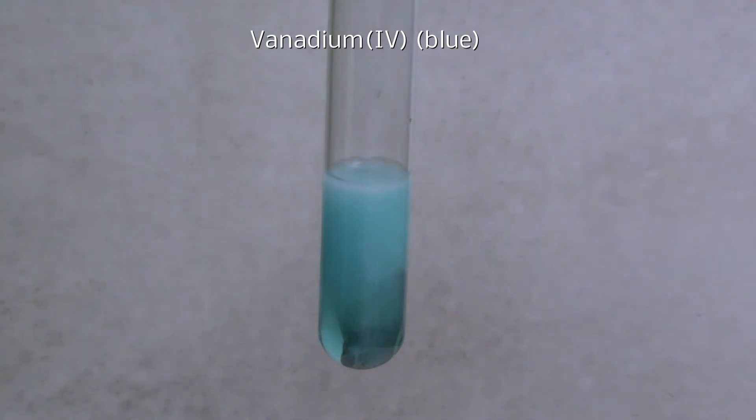The vanadium plus 4 is then reduced to the green vanadium plus 3. This is then reduced to the purple vanadium plus 2.